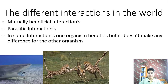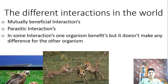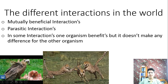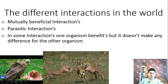The next type of interaction is one where one organism benefits but it makes no difference to the other. For example, when a lion kills a buffalo and eats most of it, but some parts remain — like the bones and some muscle tissue — the vultures come and eat the remains. The vultures benefit, but it doesn't make any difference for the lions.